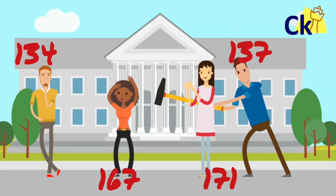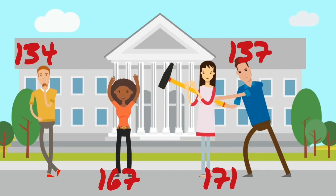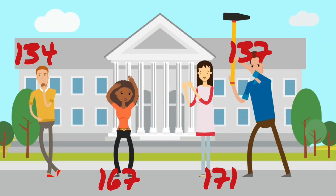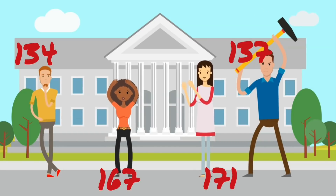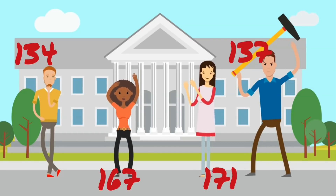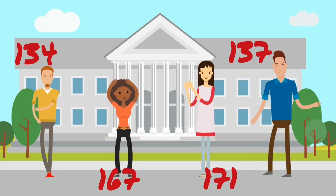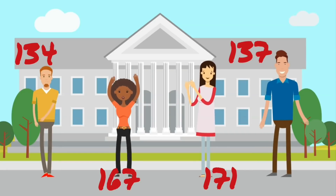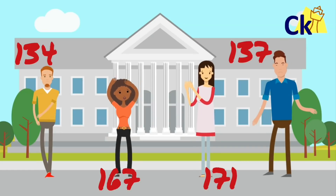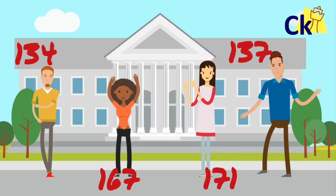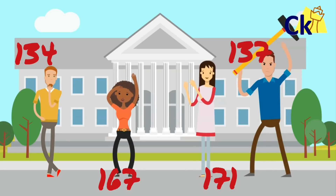And when the result came, imagine who was super happy — the boys were super happy because of normalization. Suppose the average is 150, and the cutoff was 150. All the people who gave the exam and scored 167 on Day 1 had their score reduced by 15 marks. And the boys who got 134 marks had their score increased by 15 marks.